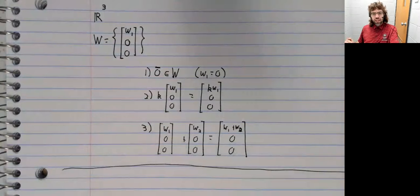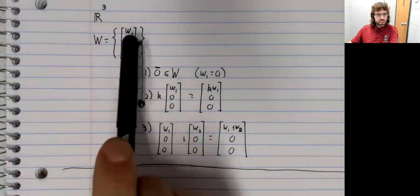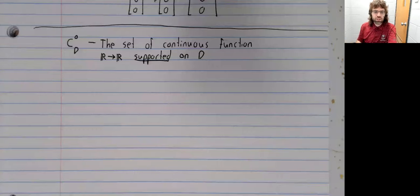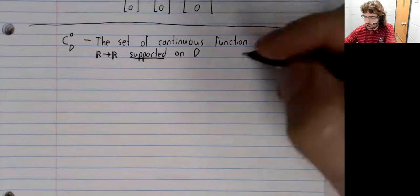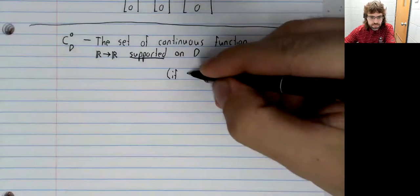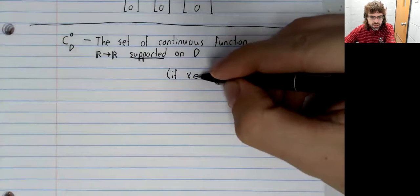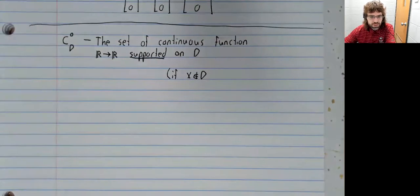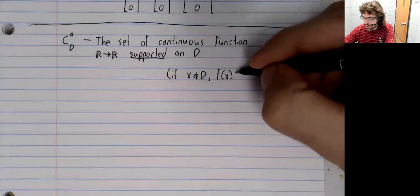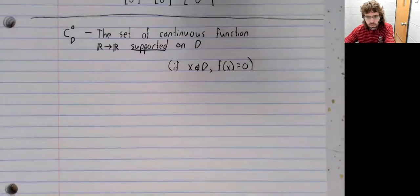Our last example will be another function example, and it will actually be kind of similar to that. Let's look at the set of continuous functions from R to R supported on D, where D is some set. And what this means is that if x is not in D, f of x equals zero.